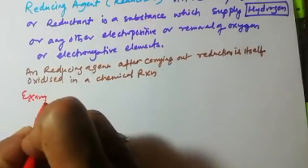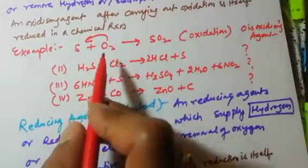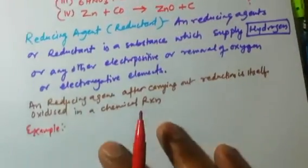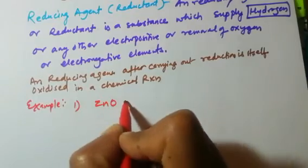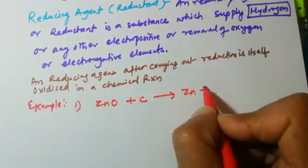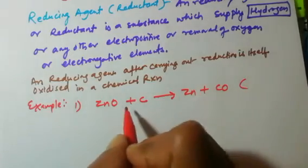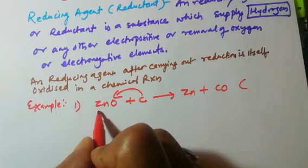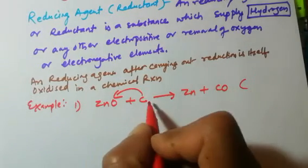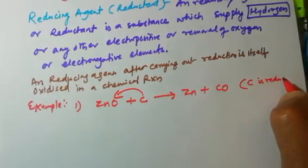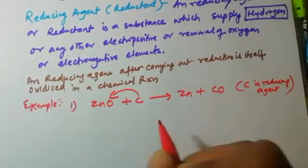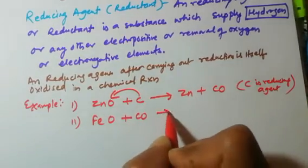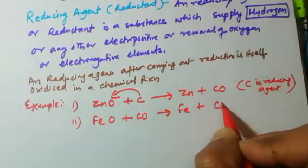For example, in ZnO + C → Zn + CO₂, carbon is taking oxygen from zinc oxide — so carbon is the reducing agent. Now you need to identify the reducing agent in: (1) FeO + CO; (2) H₂SO₄ + 2HBr → SO₂ + Br₂ + 2H₂O; (3) H₂S + Cl₂ → 2HCl + S.